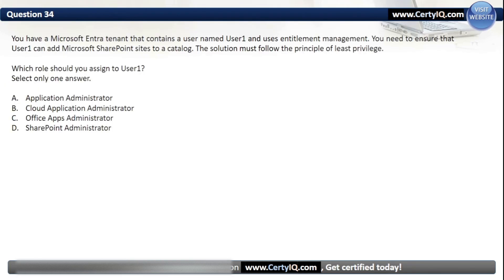Question 34. You have a Microsoft Entra tenant that contains a user named User1 and uses entitlement management. You need to ensure that User1 can add Microsoft SharePoint sites to a catalog. The solution must follow the principle of least privilege. Which role should you assign to User1? Our options are: A. Application Administrator; B. Cloud Application Administrator; C. Office Apps Administrator; or D. SharePoint Administrator. The correct option is D, SharePoint Administrator.